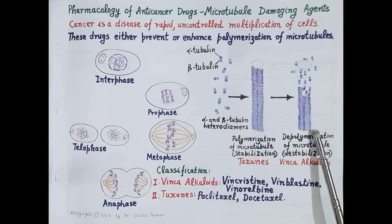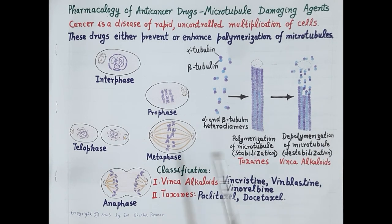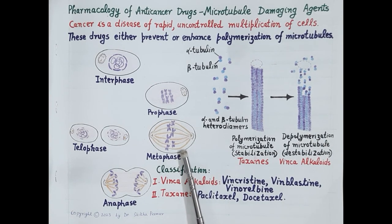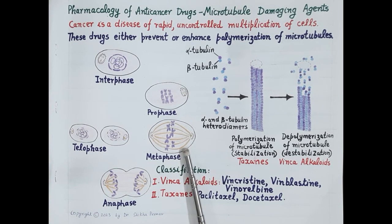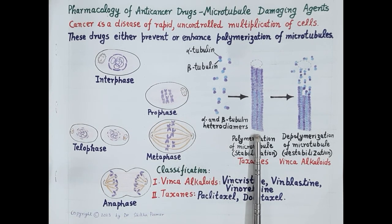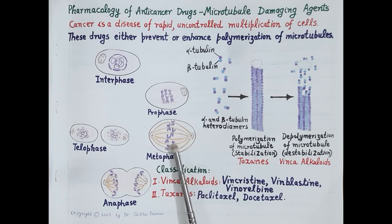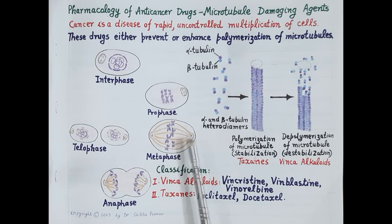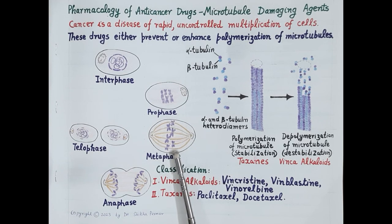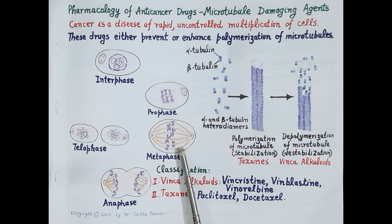During early metaphase, microtubules polymerize — they increase in length and form spindle fibers. These spindle fibers align chromosomes in a line and are connected to the centromere of each chromosome.